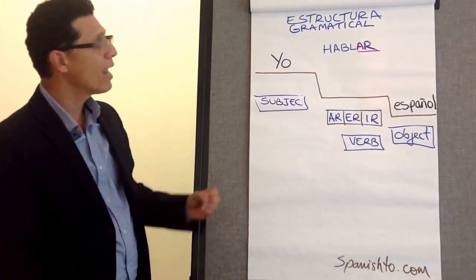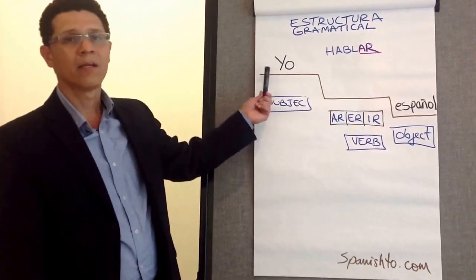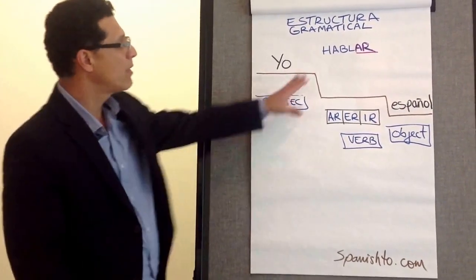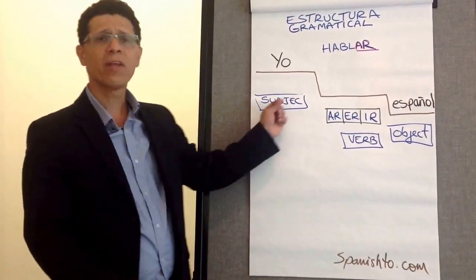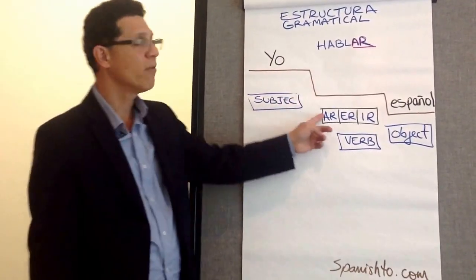Okay, so what happens when you put together a sentence in Spanish is you have to have your subject, in this case, yo. And then you place your verb. So when you place your verb in the sentence, you need to get rid of the ending.